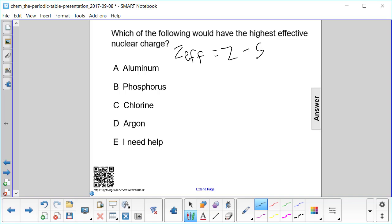So let's start by finding the number of protons for each one of these elements. These are all in the third period, starting with element 13. Aluminum has 13 protons, followed by phosphorus, which has 15.